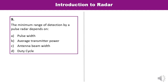Question 9: The minimum range of detection by a pulse radar depends on what? A pulse radar transmits signals in the form of pulses, and its minimum range of detection depends upon the pulse width. A is the correct answer — pulse width.